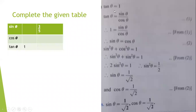In place of tan theta we will write the value, which is one. So we write one equal to sin theta upon cos theta, from equation one. Now cos theta is in divide form, so when we transfer it to the left-hand side it will get converted into a multiplier, and we get sin theta equal to cos theta, because one into cos theta is cos theta. So sin theta is equal to cos theta — we will number this as two.